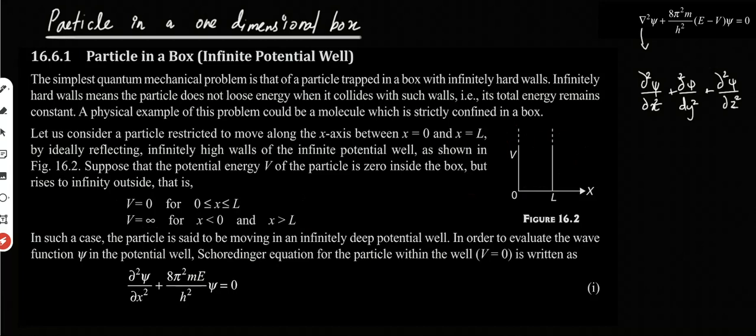In order to evaluate the wave function psi in the potential well, we use the Schrödinger equation for the particle within the well where V is equal to 0. This is the introduction; now let's look at the time-independent Schrödinger equation.